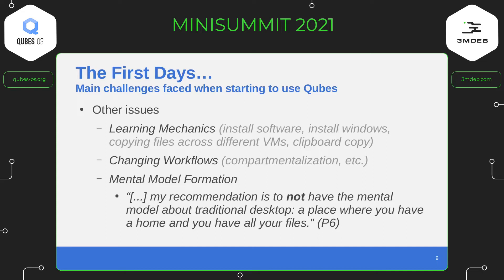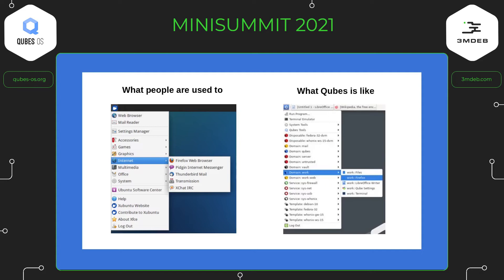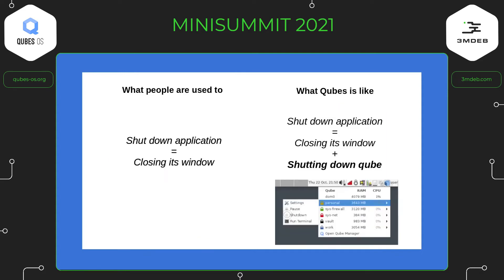There were also challenges regarding mental model formation. One user's advice for a future Cubes user was to not have a mental model of a traditional desktop — to erase what you know and start from scratch. Cubes requires a mental model of a hypervisor: in a typical system you open applications directly, whereas in Cubes you open applications within a specific cube or compartment. This also translates into closing applications — in a regular system closing the window is sufficient, whereas in Cubes you also need to shut down the cube when you no longer need it.